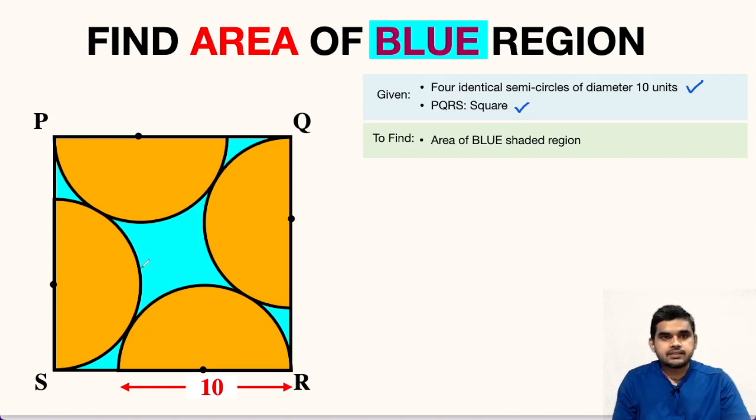For that, our approach will be to first find the area of this square and then subtract the areas of all the four semicircles. In order to find the area of this square, we need to find the side length of the square, and for finding the area of semicircle, the diameter is already known to us. So the only thing that we need to find is the side length of this square.